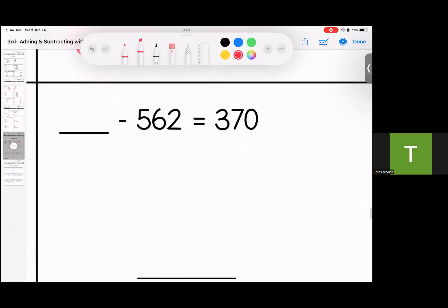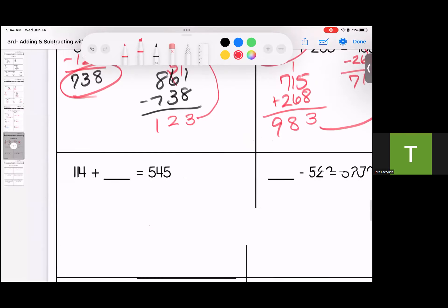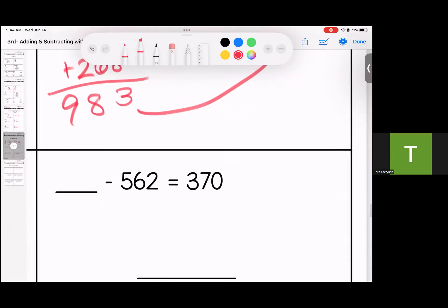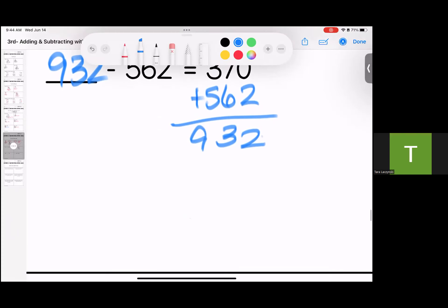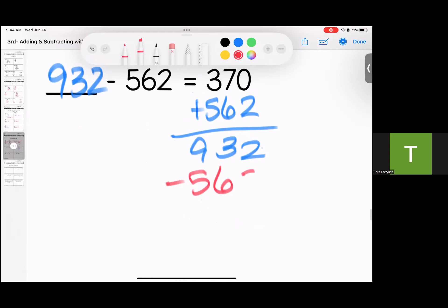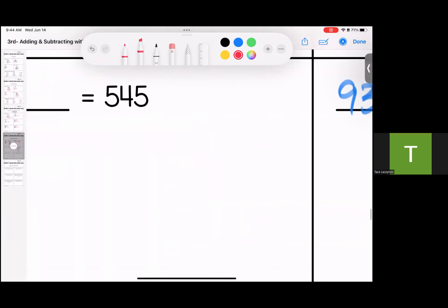Down here, again, I'm going to subtract. And since my second number is there and my first number is missing, I can add these. I get 2, I get 13, and I get 9. Let's check it. 932, if I take away 562, I should get 370. 70, and I do. So when our first number is missing, we add. When our second number is missing, we subtract.